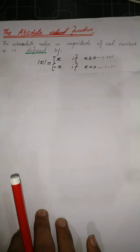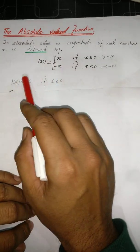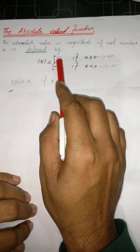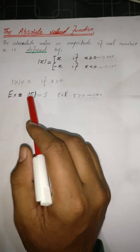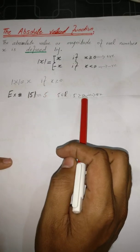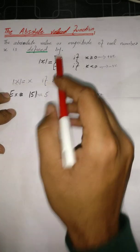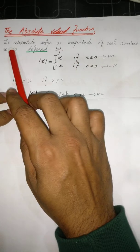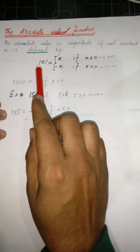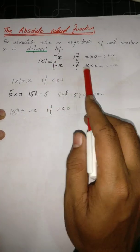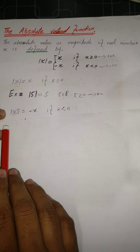To understand this definition we'll take some examples. The first part of this definition is |X| = X if X is greater than or equal to 0. We take a number greater than or equal to 0: 5 is positive, so mod of 5 equals 5. And 5 belongs to the real number set, since the definition mentions the absolute value of a real number.